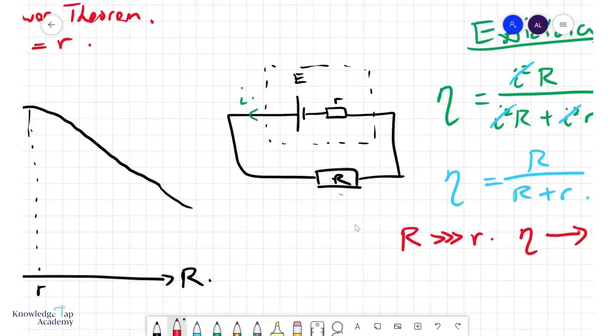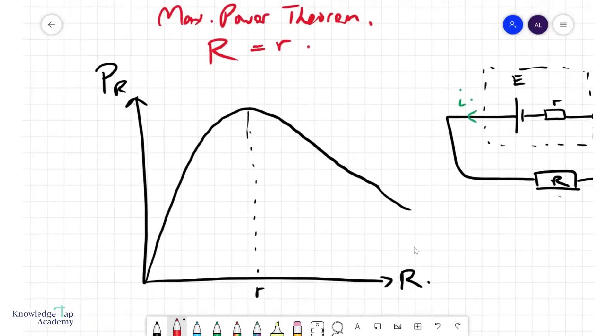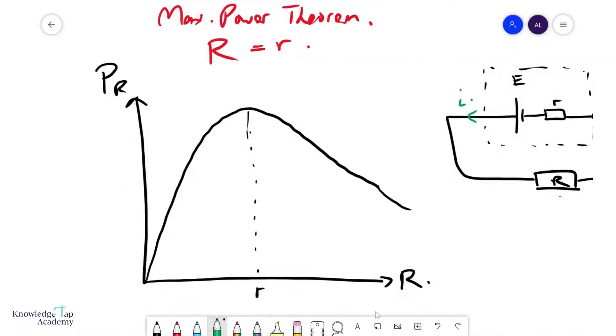But you see, there is a trade-off. If you make R very large, then you're essentially going this way on the curve, which means you're sacrificing power. So it turns out you will always place your circuit somewhere on this part of the curve. If you move this way, you're choosing power; if you move that way, you're choosing efficiency.